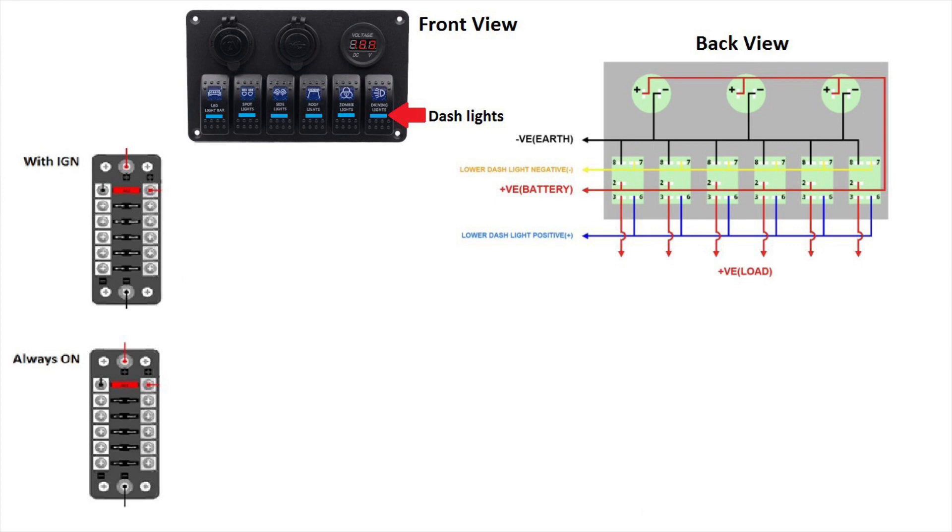Okay, first thing I do is remove all the plus VE battery wire connected on pin two of all the switches, but leave it for the three top sections, which are voltmeter, USB charger, and 12-volt charger.